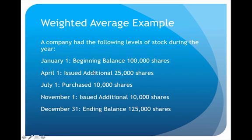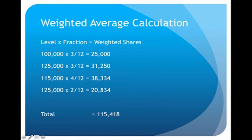Then looking at the next change: on April 1st they added 25,000 shares, raising the level from 100,000 to 125,000. That stays the same from April 1st until July 1st — April, May, June — so 125,000 shares for another three months. That gives a weighted average for that period of 31,250.